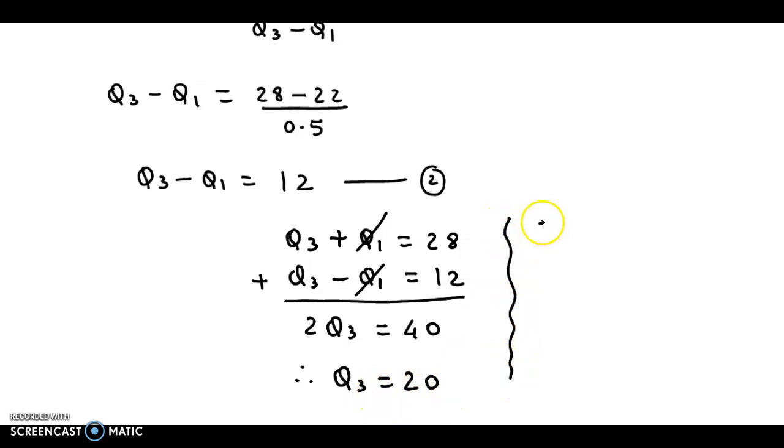Now from equation 1, we can find Q1. Equation 1 is Q3, that is 20, plus Q1 is equal to 28. So from here we get the lower quartile Q1. So 28 minus 20, that is equal to 8.